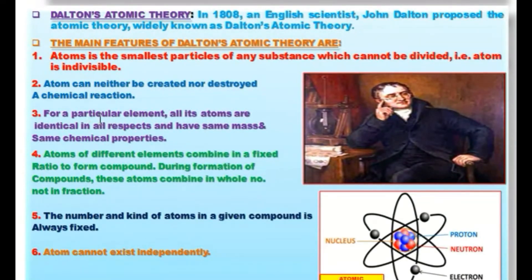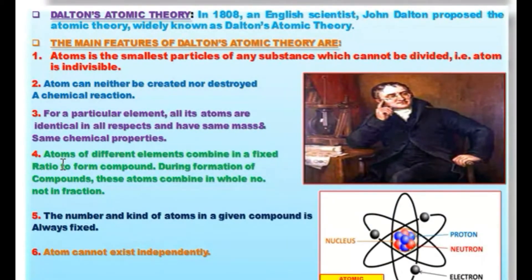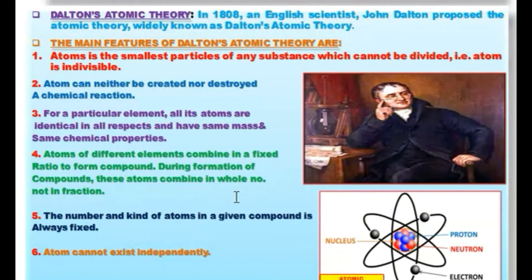Number three: for a particular element, all its atoms are identical in all respects and have the same mass and the same chemical properties. Number four: atoms of different elements combine in a fixed ratio to form a compound.